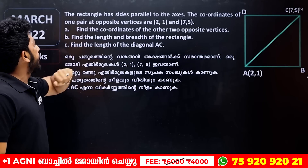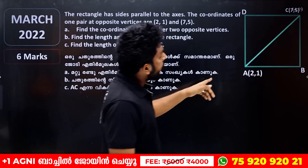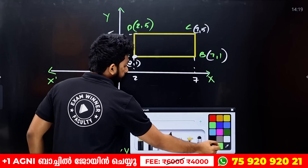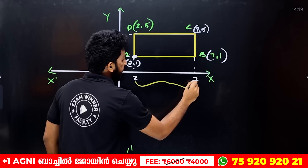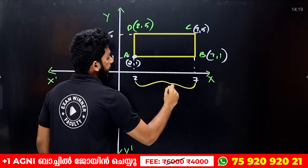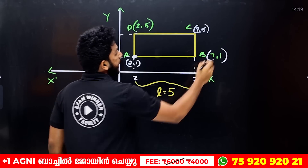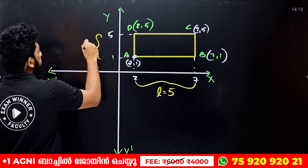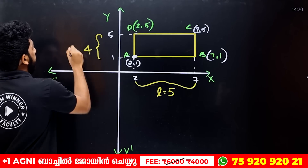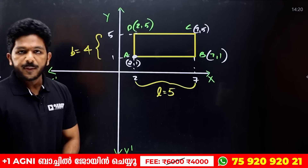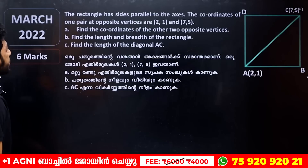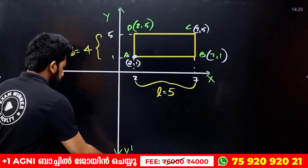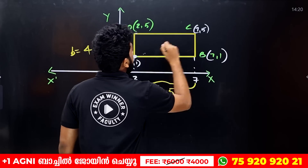Find the coordinates, then find the length and breadth of the rectangle. The breadth is 4 units and the length is 5 units — so dimensions are 5 by 4. Now find the length of the diagonal AC using the distance formula.